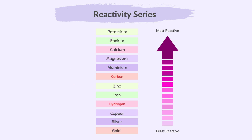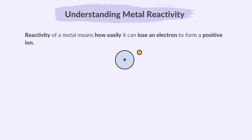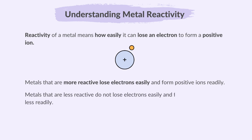Even though hydrogen and carbon are not metals, they are included in the reactivity series because they are used to extract metals from their oxides. The reactivity of a metal means how easily the metal can lose an electron to form a positive ion. Metals that are more reactive lose electrons easily and form positive ions readily, while less reactive metals do not lose electrons easily and form positive ions less readily.